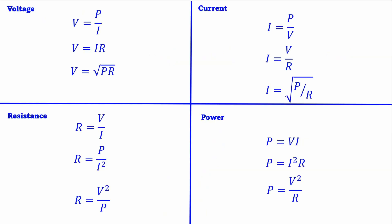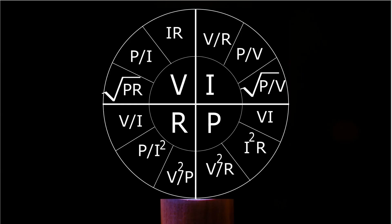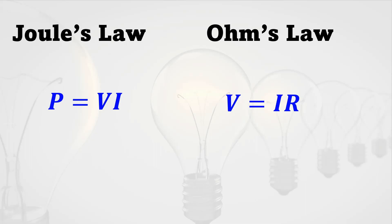Here I've split them up into their respective voltage, current, resistance, and power forms in a grid, and you can also see them in the circle. I don't think either the grid or the circle are particularly good memory devices for remembering all the equations, so it's not worth trying to memorize them. Just remember: you only need to memorize one form of Joule's Law — P equals VI — and one form of Ohm's Law — V equals IR — and you can derive all the others. With enough practice, the other ones will start to sink into your memory and you won't even have to derive them anymore.